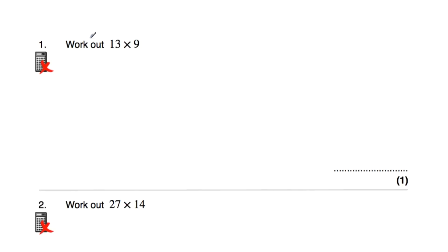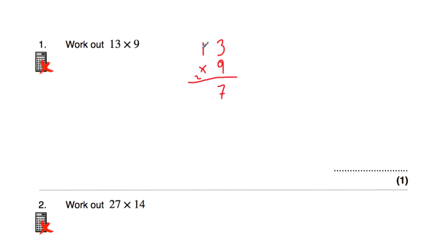So question number one. We've been asked to work out 13 multiplied by 9. So let's write our 13, then our multiplication sign, and then 9. 9 times 3 is 27, put our 7 down and carry our 2. 9 times 1 is 9, plus 2 is 11, so our answer is 117.